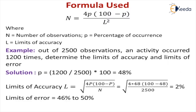To calculate the required number of observations, the formula is: n = 4p(100 − p) / i², where n is the number of observations, p is the percentage of time that activity has occurred — whether that activity is machining or talking — and i is the limit of accuracy or limit of error. For example, out of 2,500 observations, an activity has occurred 1,200 times.